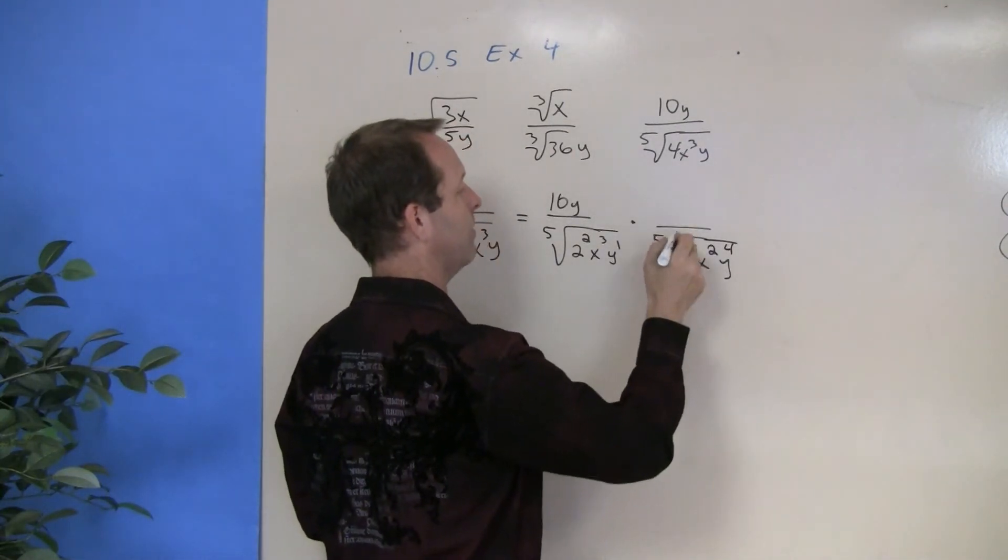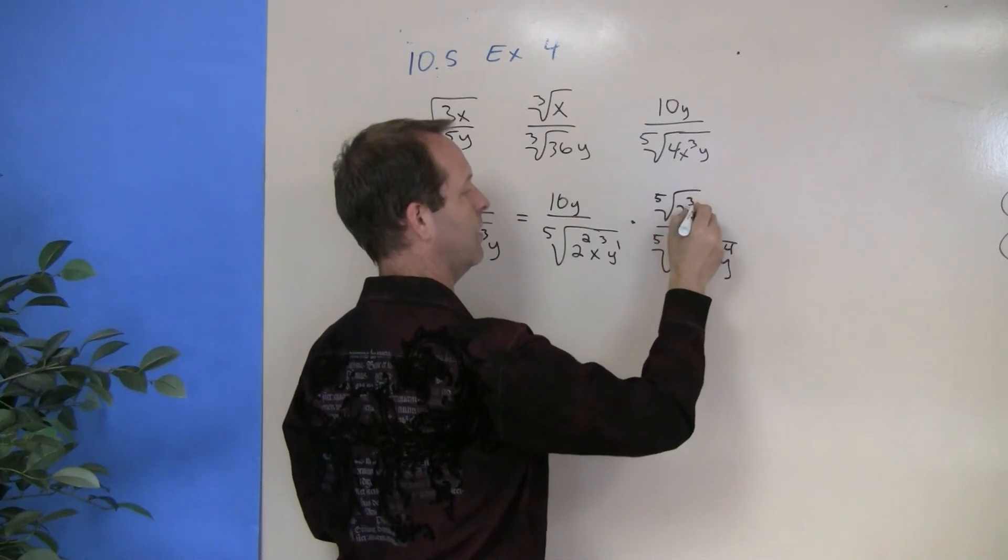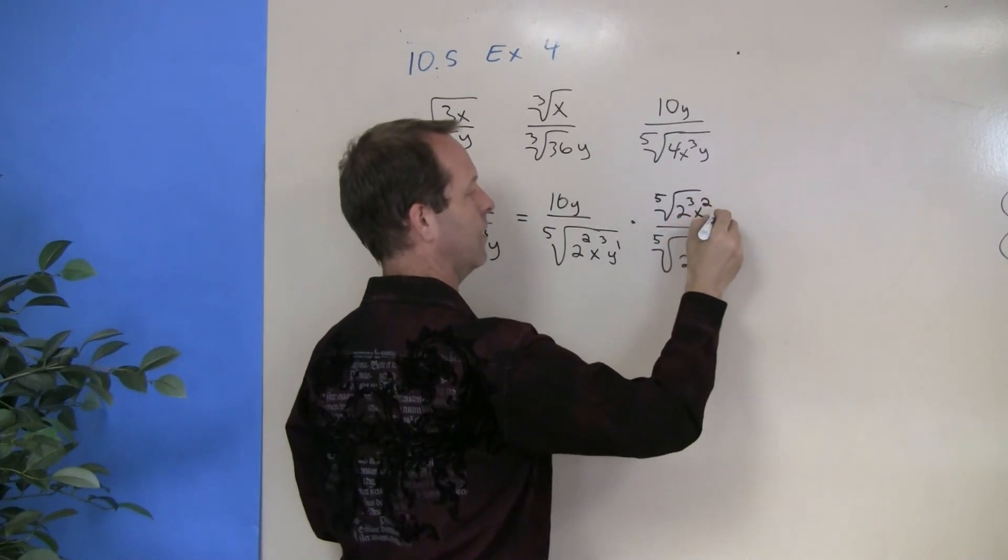And on top is the same thing: 2 cubed, x squared, y to the fourth.